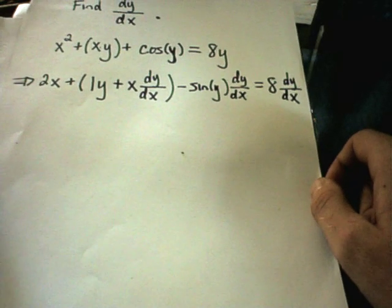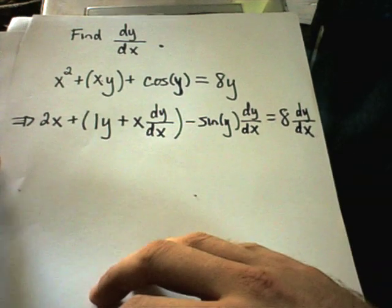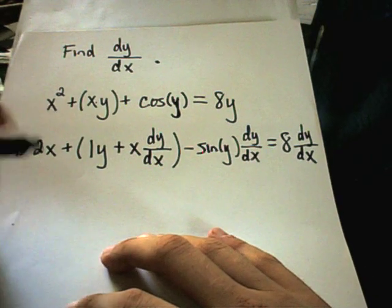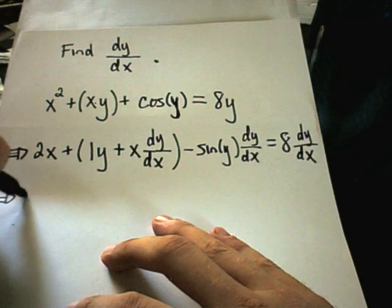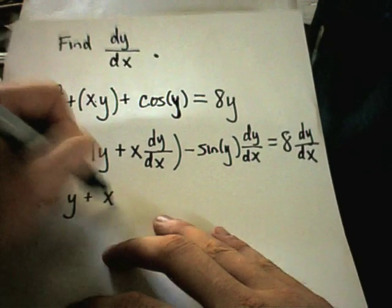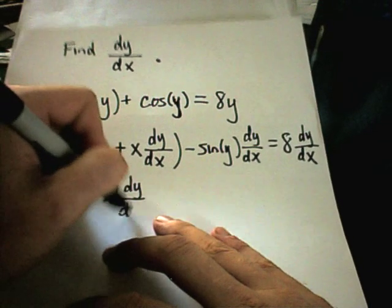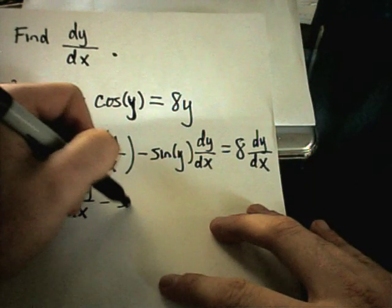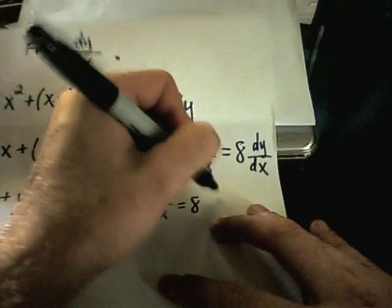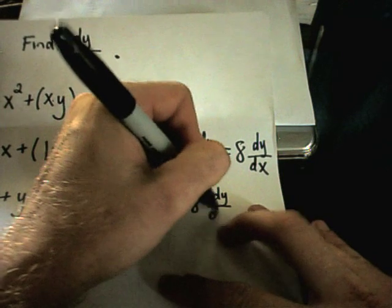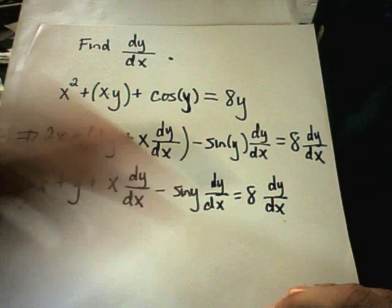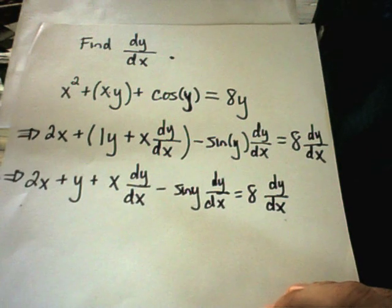The only thing really left that I have to do in this case is to get the dy/dx's on one side and everything else to the other. So I'm just going to remove my parentheses here. Normally you would distribute if there was anything to distribute. But in this case, there's really not. So get rid of your parentheses, and that equals 8 dy/dx. Notice I have three terms that have dy/dx's and I have two terms that have no dy/dx's.